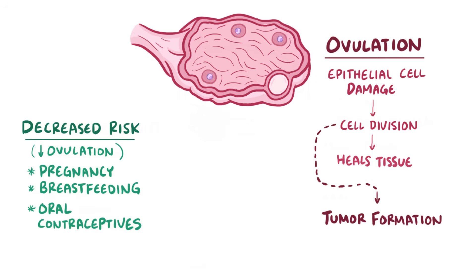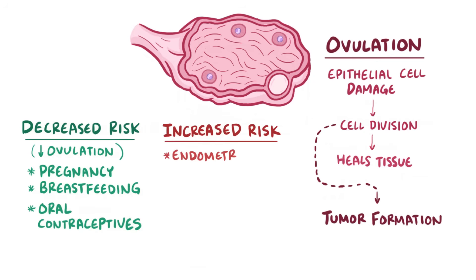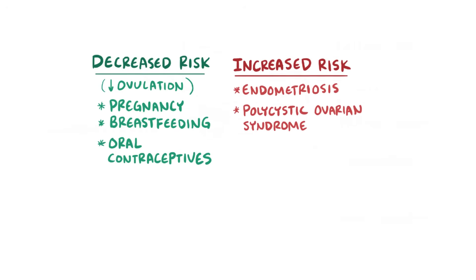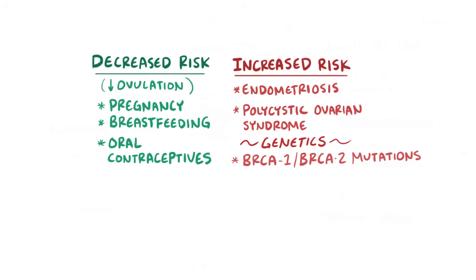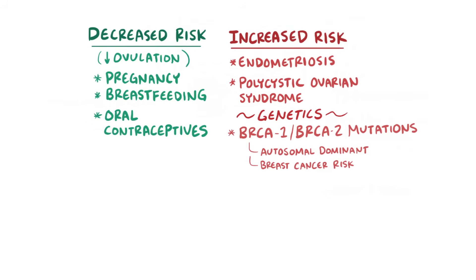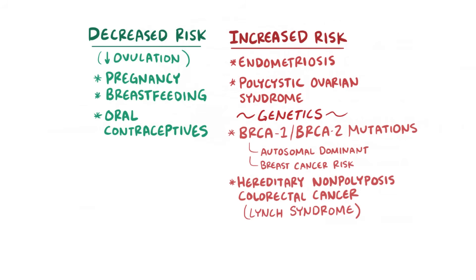On the flip side, some things associated with an increased risk include certain medical conditions like endometriosis and polycystic ovarian syndrome. There are also some genetic risk factors, like having the BRCA1 or BRCA2 mutation, which are both autosomal-dominant mutations that, in addition to ovarian cancer, carry with them an increased risk of breast cancer. There's also hereditary nonpolyposis colorectal cancer, also known as Lynch syndrome, which increases the risk of developing a number of cancers, including ovarian cancer.